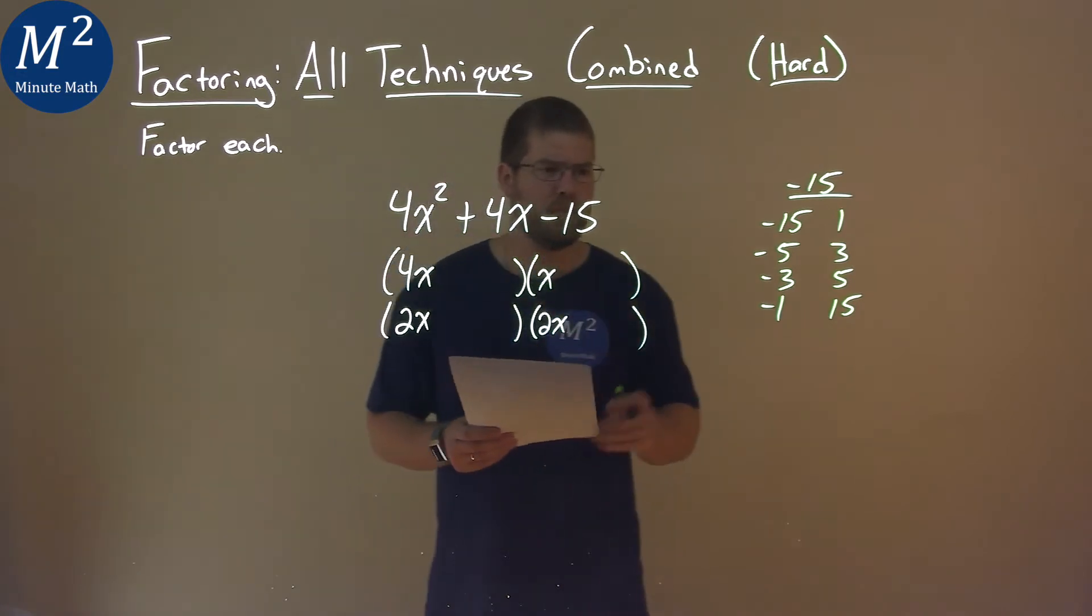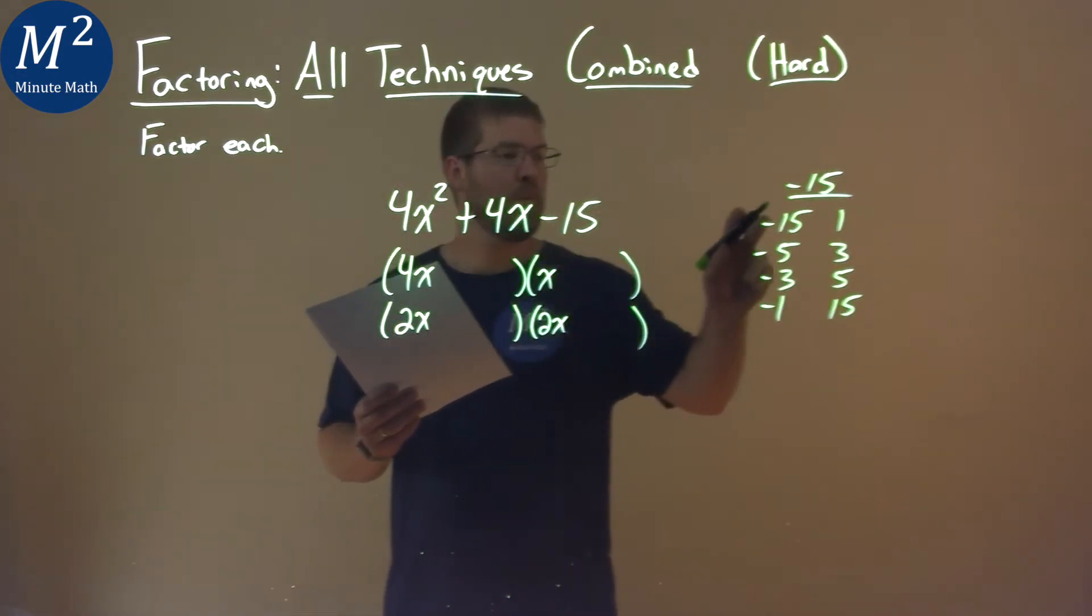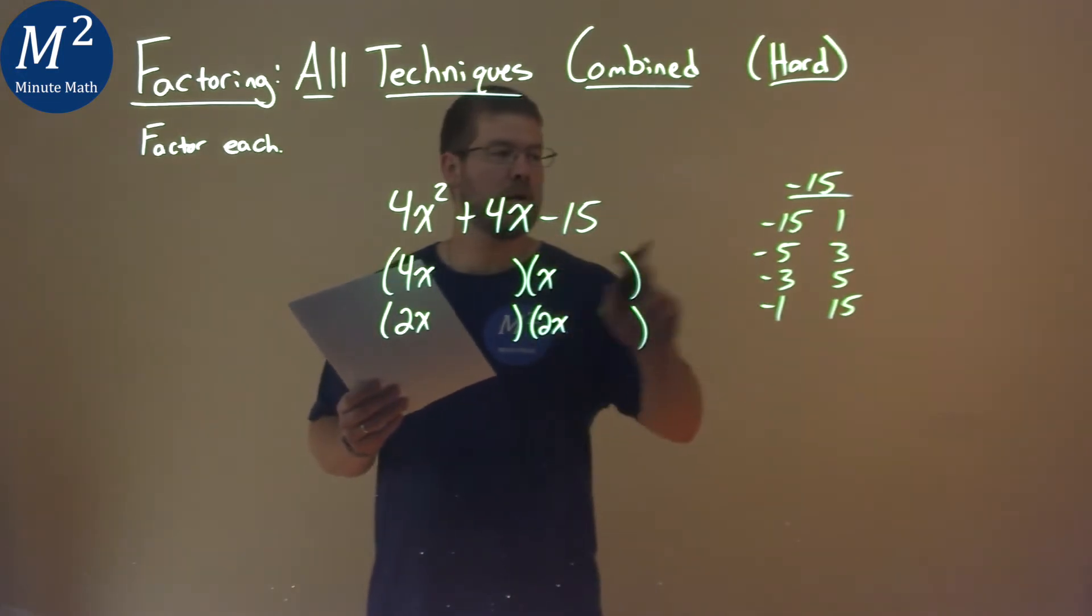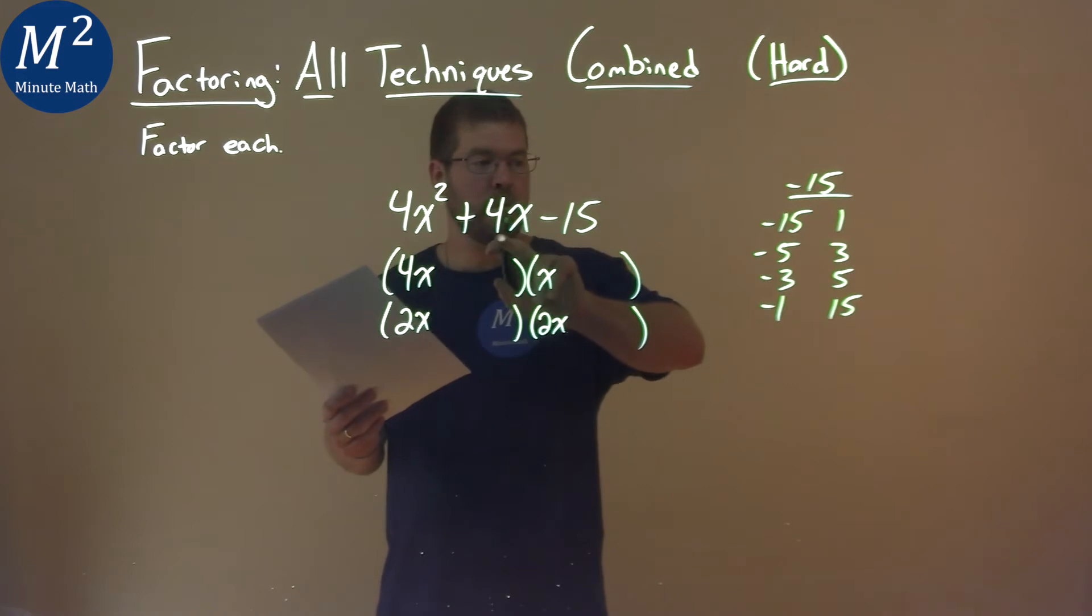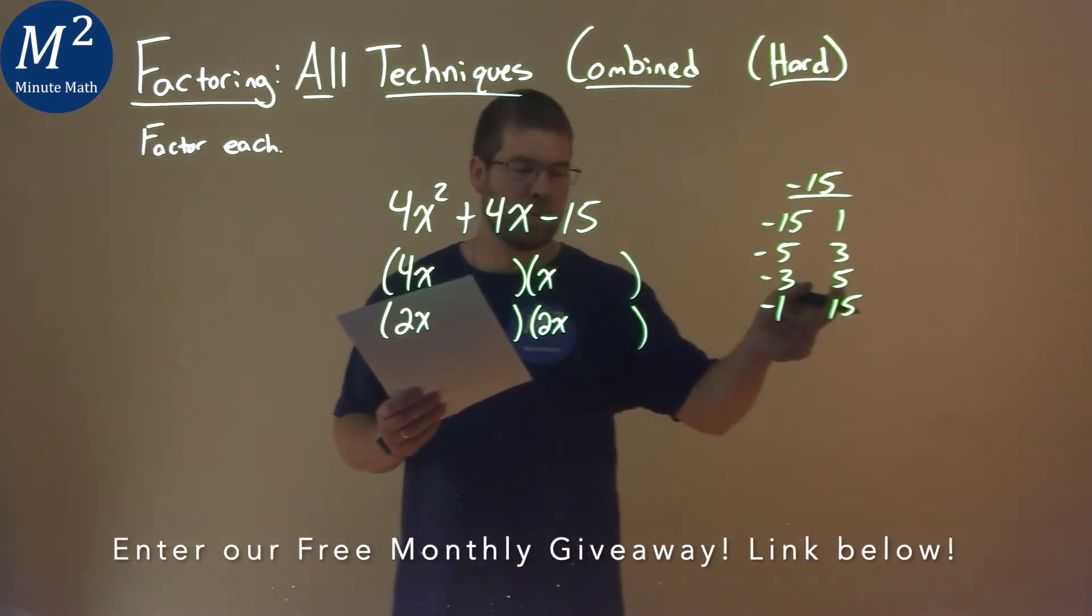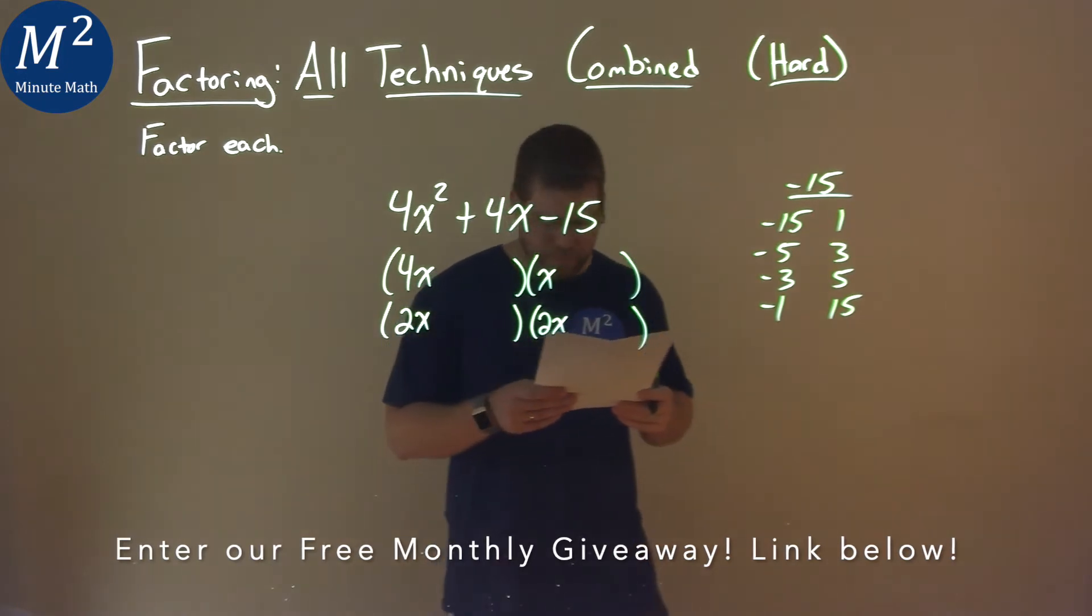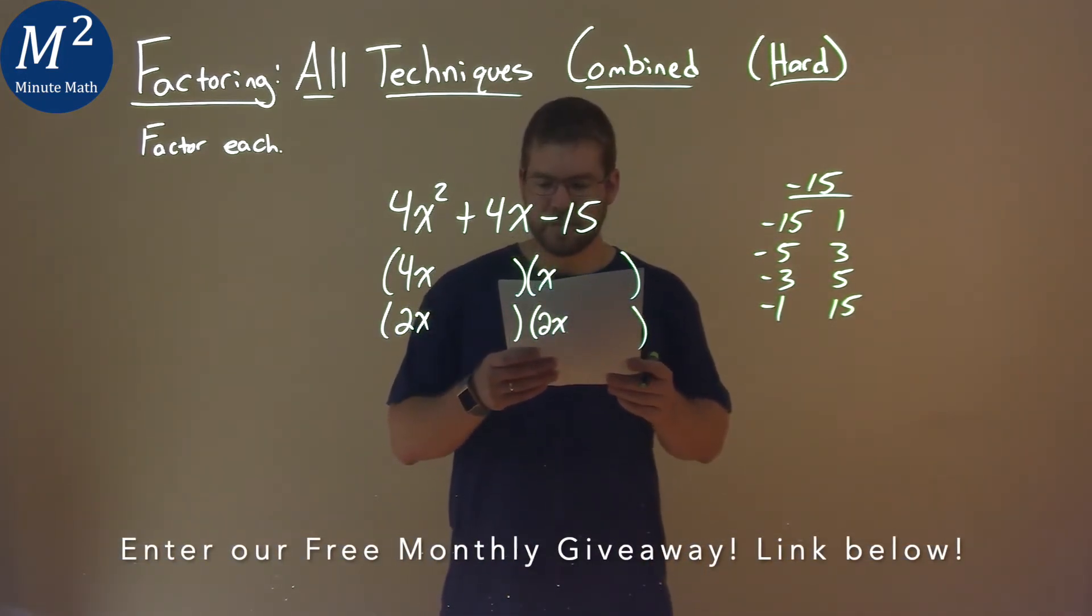All right, with all of these pairs, we want to figure out which one where 4 times one of the numbers in a pair plus 1 times the other equals positive 4, or 2 times one of the numbers in the pair plus 2 times another number equals positive 4 as well. So let's take a moment here, see if we can get it.